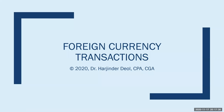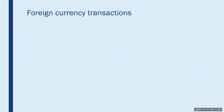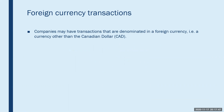Hello everybody, this is Harjinder and welcome to the lecture video for topic 15, foreign currency transactions. Companies can from time to time have transactions that are denominated in a foreign currency — i.e. a currency other than the Canadian dollar. When a Canadian company records these transactions in its books, the debits and credits are understood, but the dollar value to be reported needs to be converted into the equivalent Canadian dollars.